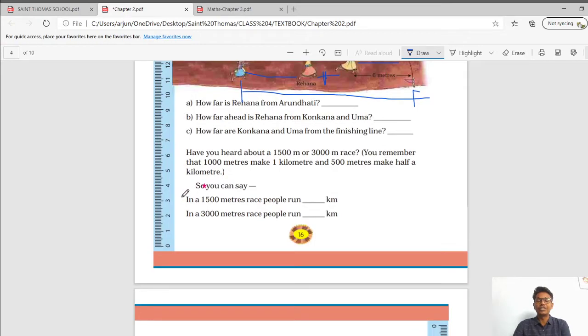This type of question can be asked. In a 1500 meter race, people run dash kilometer. You have to convert 1500 meters into the kilometer. We know that 1500 meters equal to 1 and a half kilometer. Now, converting 3000 meter into kilometer, what we are doing? Just divide it by 1000.